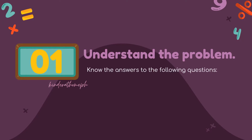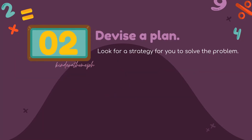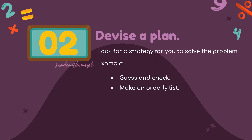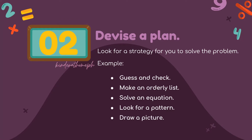To understand the problem, we first need to know the answers to the following questions: What is asked? What are the given facts? Then we look for a strategy to solve the problem. We can do guess and check, make a list, solve an equation that describes the problem, look for a pattern, draw or illustrate the problem, or use a formula.